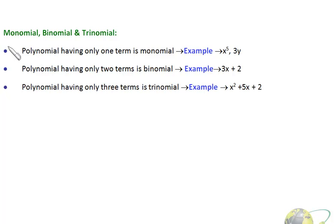Now friends, let's discuss the terms monomials, binomials, and trinomials. Polynomials having only one term is monomial. Here we see x raised to 5, 3y. This is a single term and this is also a single term.